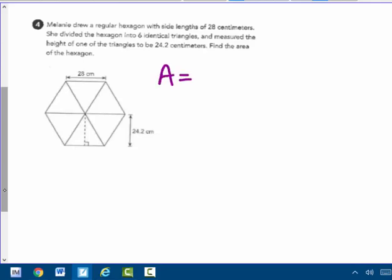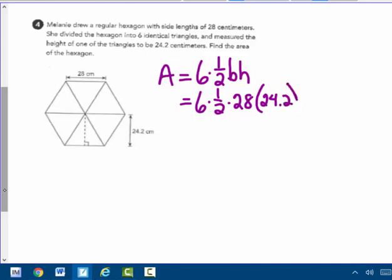So that hexagon is six identical triangles: six times one-half base times height. Well, six times one-half is 3. Or I could just write 6 times 1/2 times the base of 28 times the height of 24.2. So 3 times 28 is 84. 84 times 24.2 would give me 2,032.8 centimeters squared.